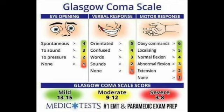Mild TBI will be a GCS score of 13 or higher, moderate is 9 to 12, and severe is 8 or less.